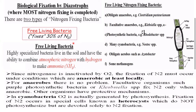The nitrogenase enzyme helps in converting atmospheric nitrogen into ammonium. Since nitrogenase is inactivated by oxygen, the fixation of nitrogen must be carried out under conditions where the environment is at least locally anaerobic. For anaerobes there is no problem. Facultative organisms such as purple photosynthetic bacteria or Klebsiella species fix nitrogen only when anaerobic conditions are present. Other organisms have protective mechanisms — in the case of cyanobacteria, oxygen is actually generated by photosynthesis, so fixation of nitrogen occurs in special cells known as heterocysts, which do not photosynthesize but are devoted solely to nitrogen fixation.